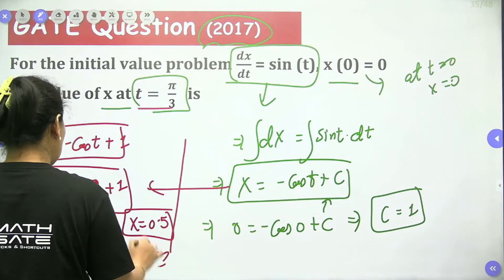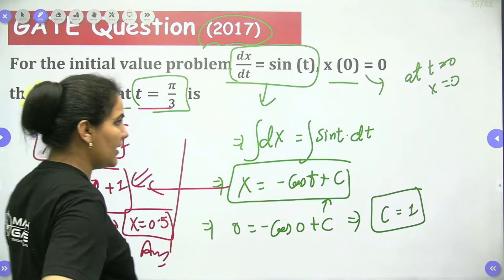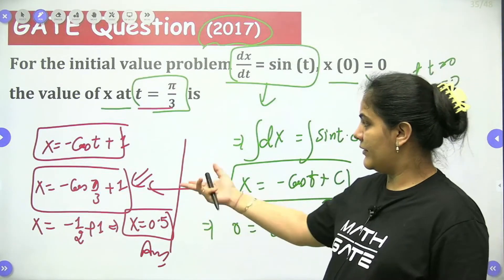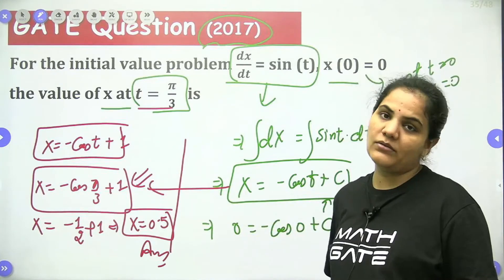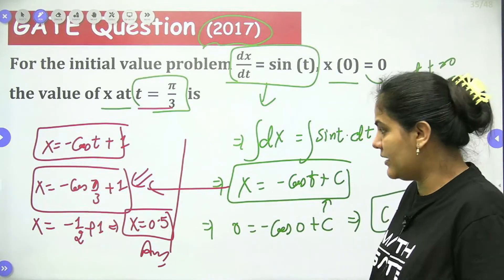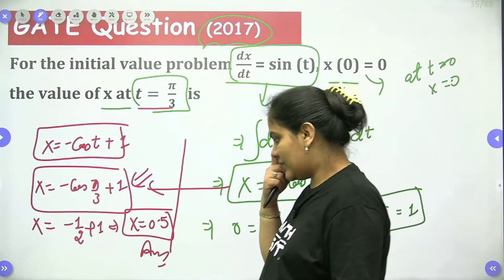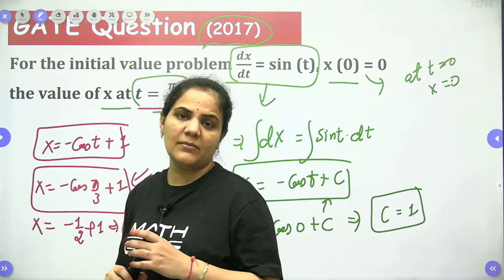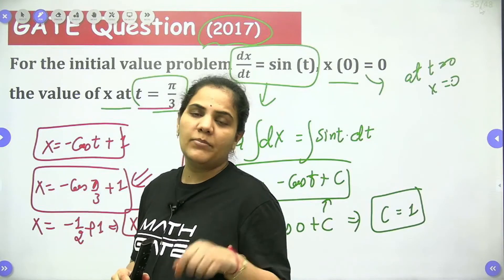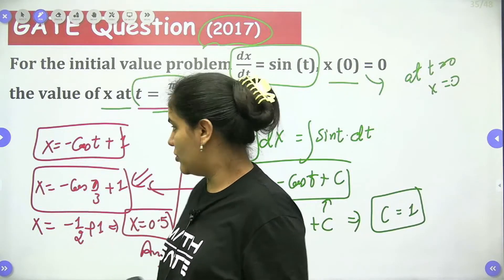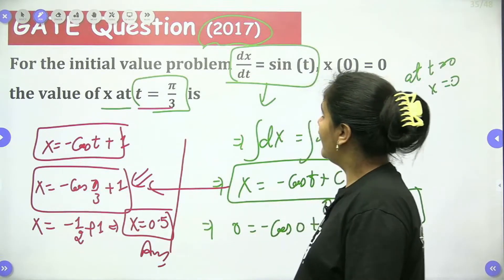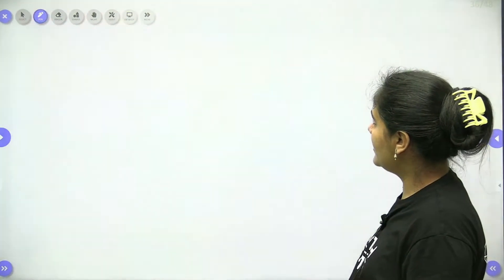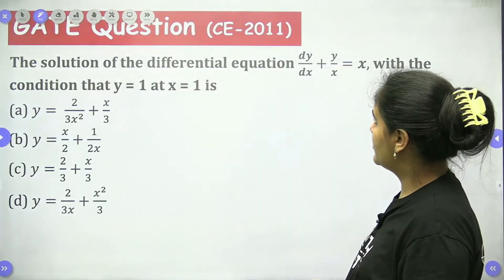If we have an option then we can leave here only. But we don't have an option, so we have to conclude and find the answer. Cos(π/3) is 1/2, so it will be minus 1/2 plus 1, hence it will be 0.5. Now let's approach the next question. It's clear to everyone.